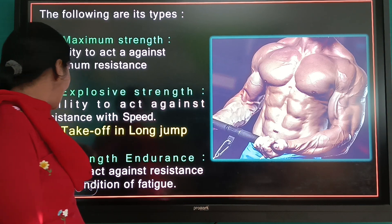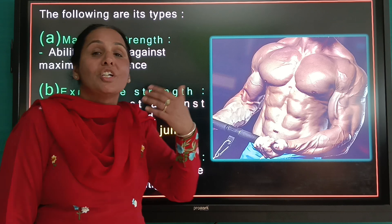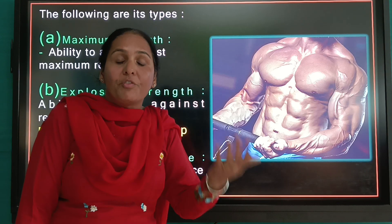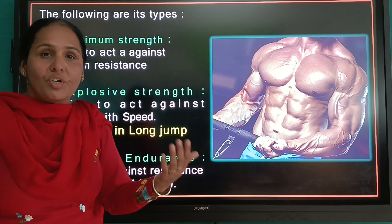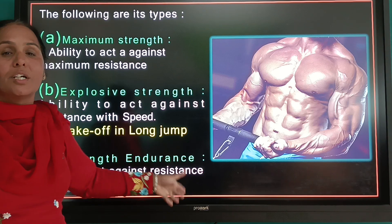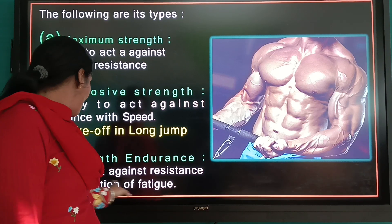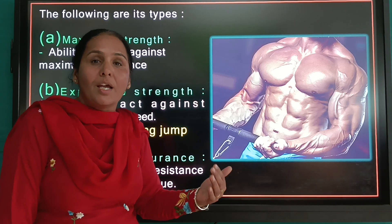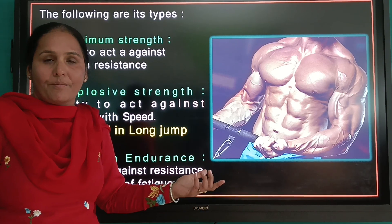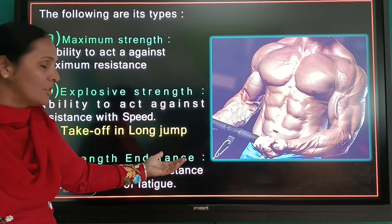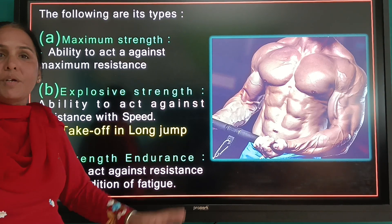The third type is strength endurance — the ability to act against resistance under the condition of fatigue. Examples include road cycling, marathon racing, and cross country. This is our strength endurance.